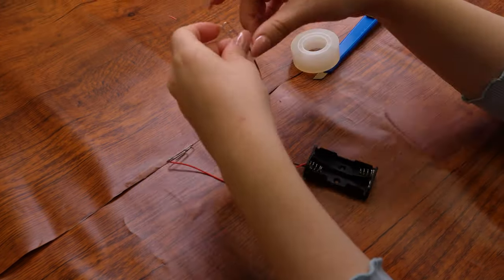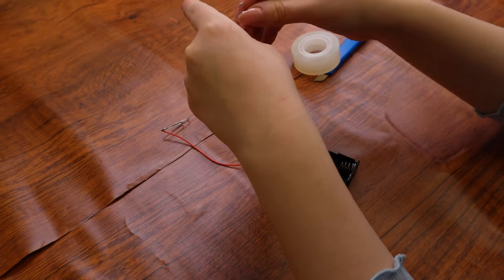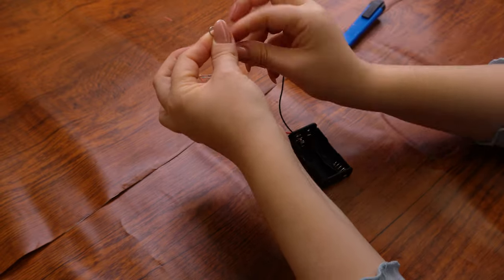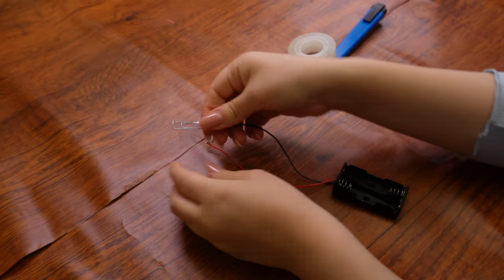Now back to our experiment. Strengthen the connection between each paper clip and wire by wrapping a piece of scotch tape around the place where they meet. Start with one side, then do the other side.